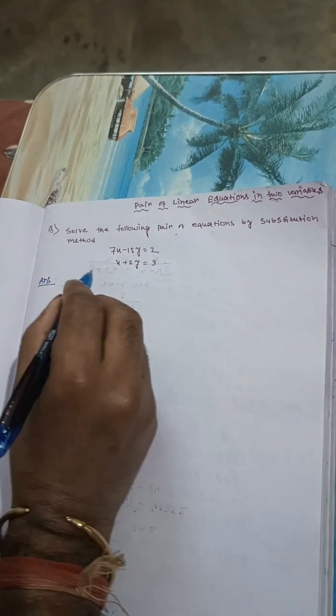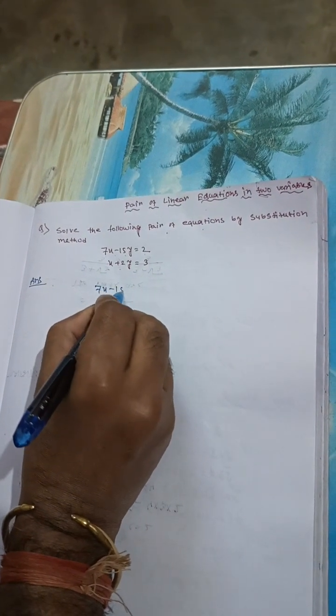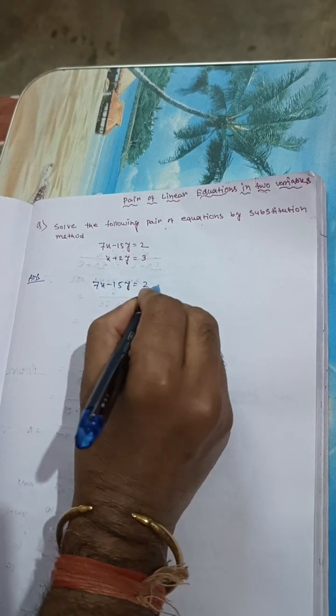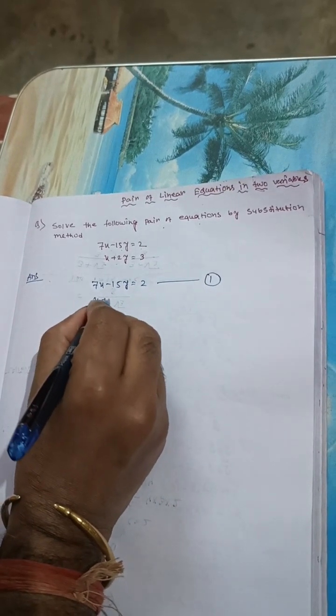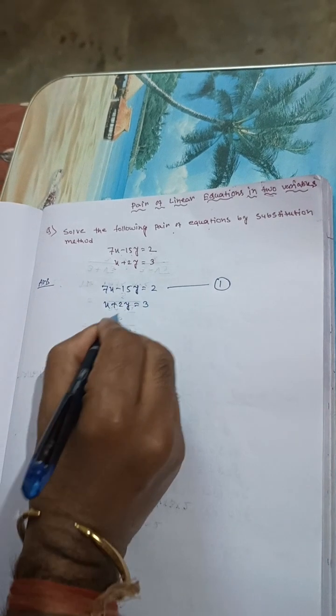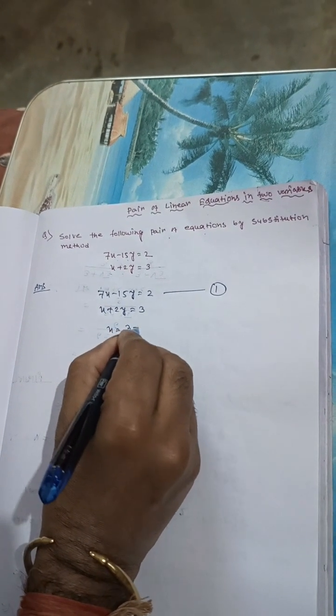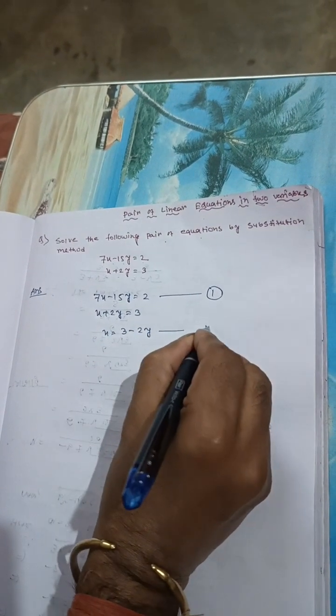Let's start the answer. 7x minus 15y equals 2, this is equation 1. And x plus 2y equals 3. Now, x equals 3 minus 2y. This is equation 2.